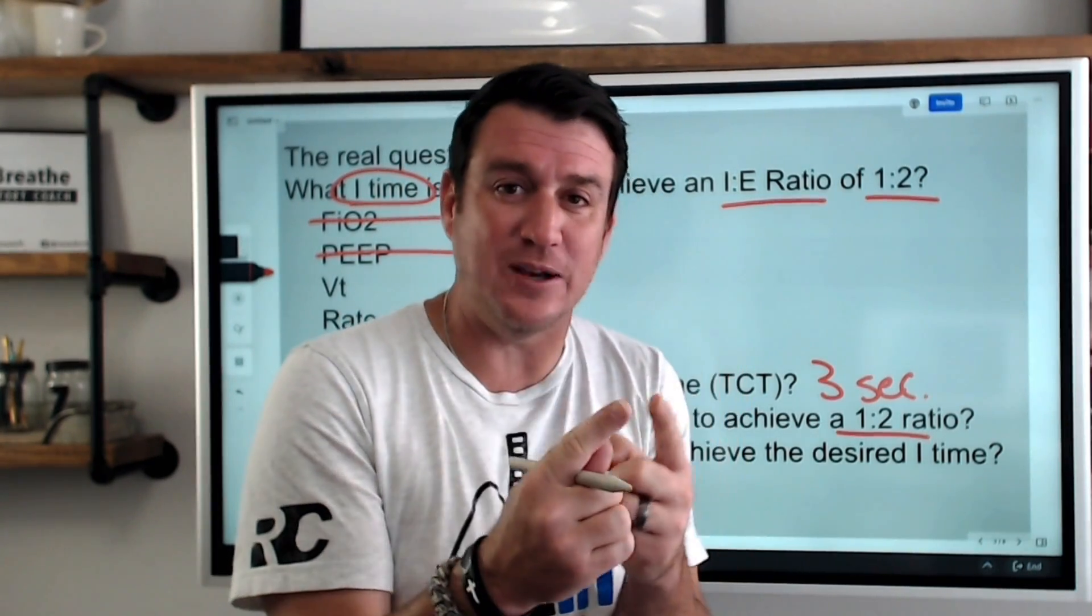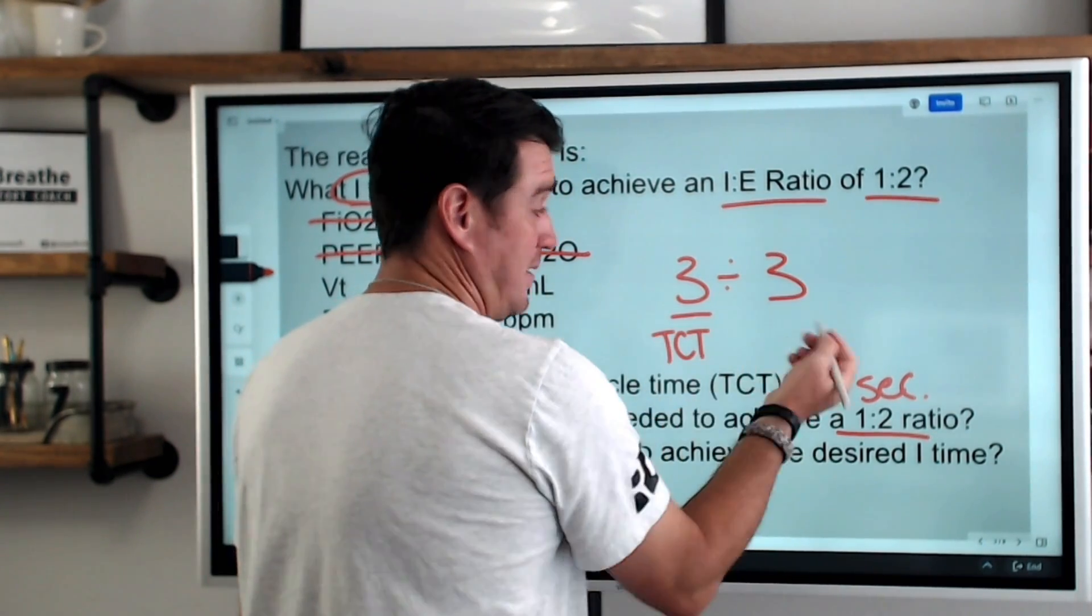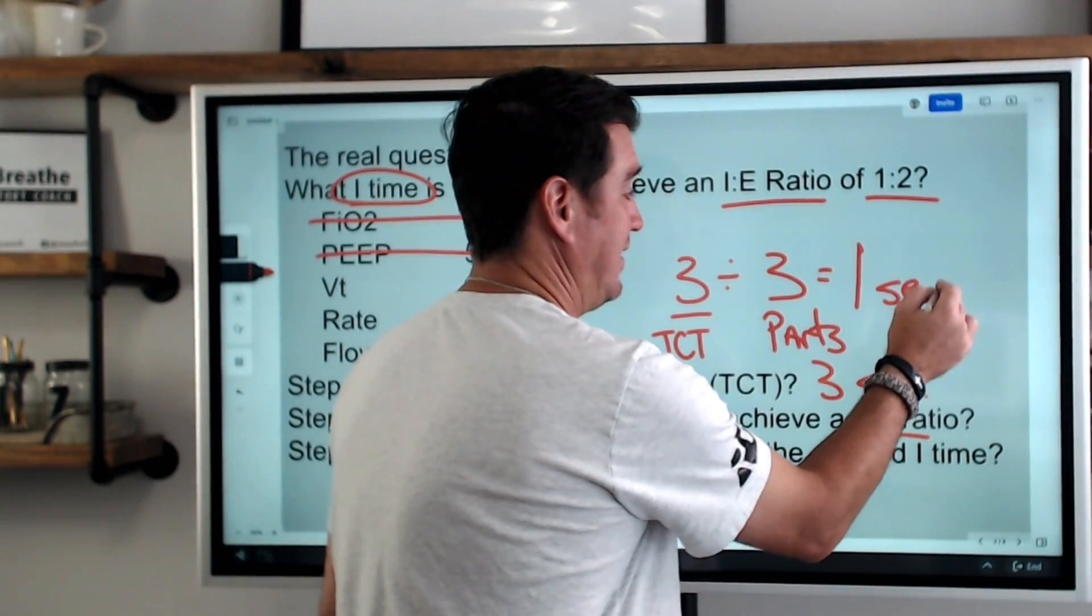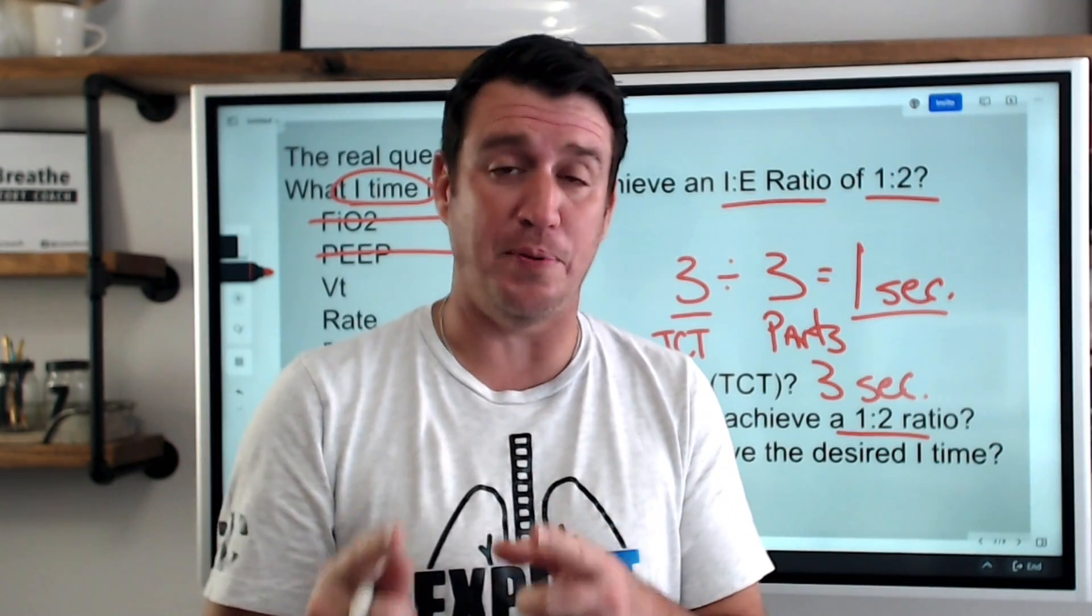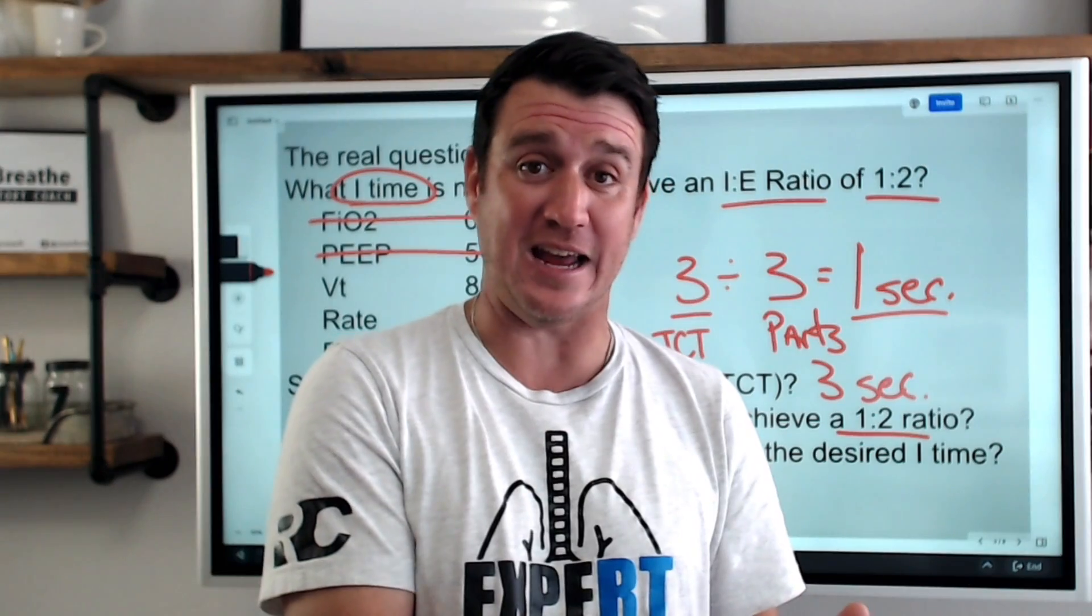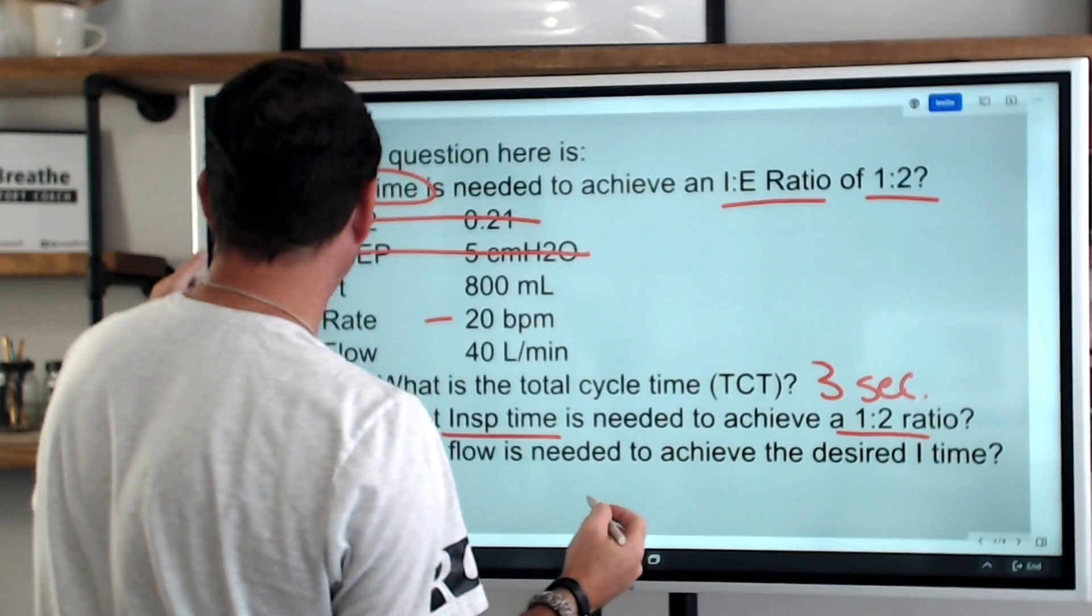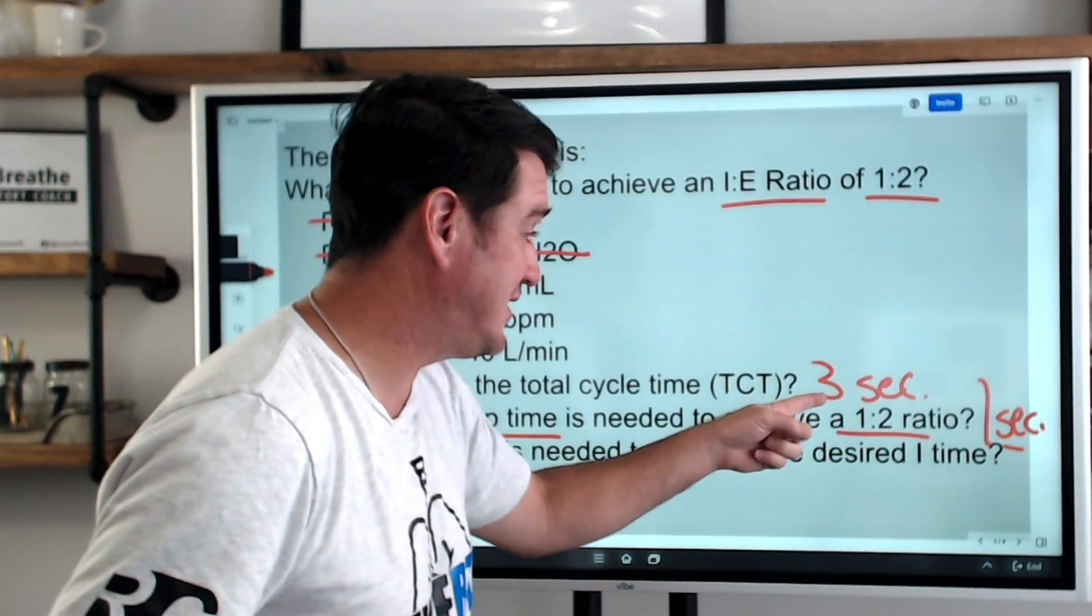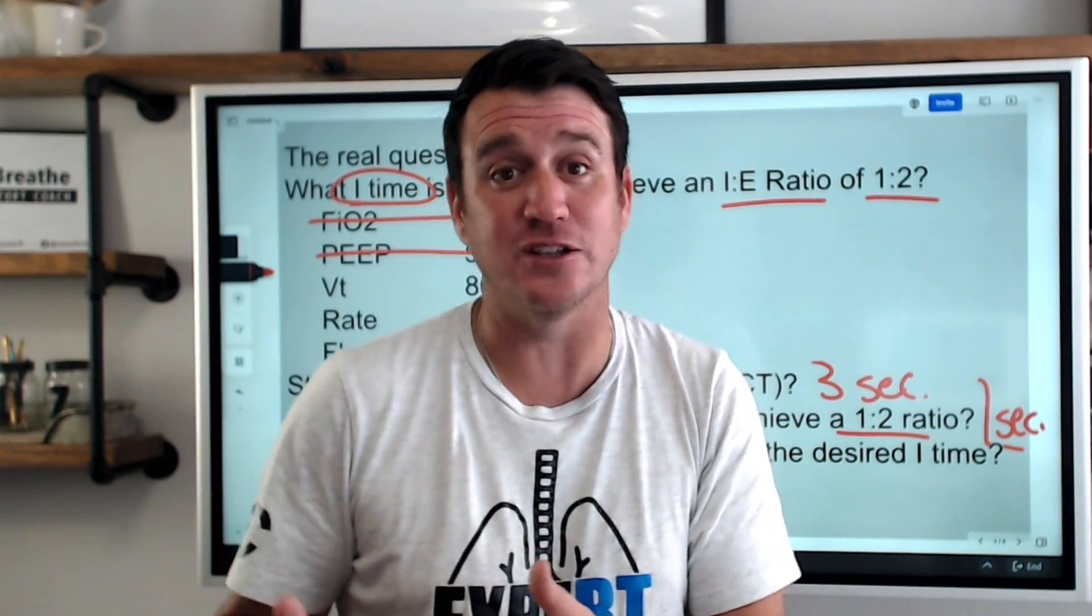And we have three seconds to do that in. So all we have to do when we recognize that we have three total parts is we just have to divide our total cycle time by our parts. This is total cycle time. This is parts. When we do that, we realize that one part equals one second. What does that mean? That means that in a three second window, if you're going to chop that up into equal parts of three and you're going to spend one of them in inspiration and two of them in exhalation, then that means you're going to have a one second I time and a two second expiratory time. So we know right now what we need. We know that our I time we need is going to be one second.